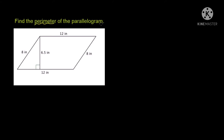In a parallelogram, first we are going to see the perimeter of the parallelogram. What is perimeter? Perimeter is the sum of the length of all the sides. So, here we have four sides. We have to find the perimeter of the parallelogram — we have to sum the lengths of all four sides. So, what is the perimeter of the parallelogram? Perimeter of the parallelogram is the sum of the lengths of the four sides.